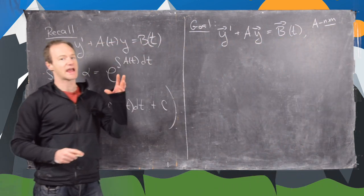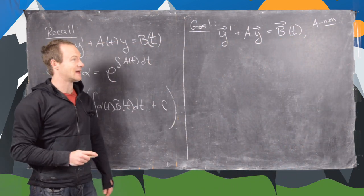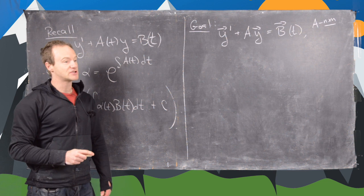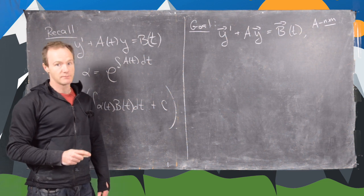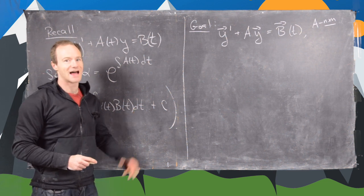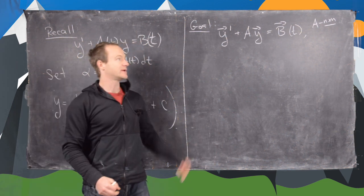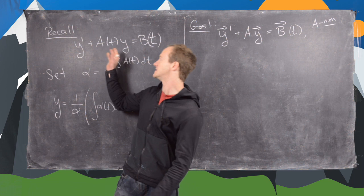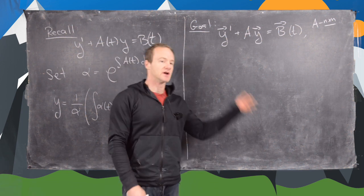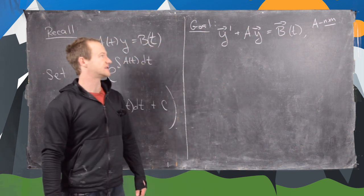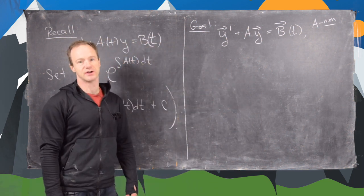A is a matrix of numbers — not a matrix of functions. So we're doing a simpler case than this covers, but still it's a vector equation.